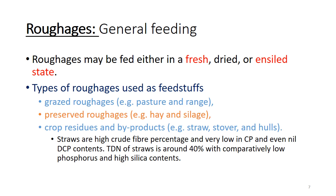Types of roughages used as feedstuffs include pasture and rangeland through grazing, hay making, silage, preserved roughages, and crop residues and byproducts like straw, corn stover, and rice stalks. These crop residues, which have no nutritive value for humans, can be converted through ruminant animals into good-quality products. Straws are high in crude fiber and very low in crude protein — less than four percent — and digestible crude protein is near zero. TDN of straw is around 40 percent, with comparatively low phosphorus and high silica content, making them unsuitable for monogastric species but usable in ruminant feeding.